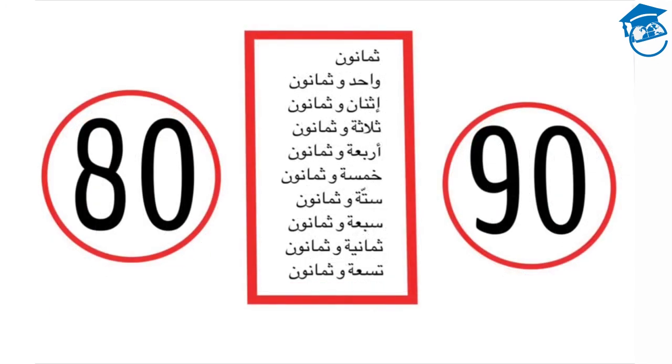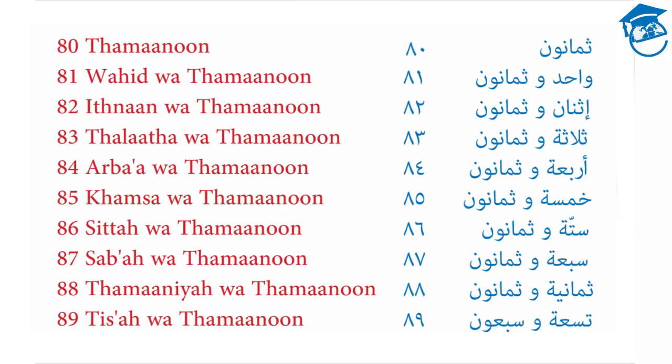The numbers from 80 to 90. 80 is Thamanoon. 81 is Wahed was Thamanoon. 82 is Ithnan was Thamanoon. 83 is Thalatha was Thamanoon. 84 is Arba was Thamanoon. 85 is Khamsa was Thamanoon. 86 is Sitta was Thamanoon. 87 is Saba was Thamanoon. 88 is Thamanya was Thamanoon. And 89 is Tissa was Thamanoon.